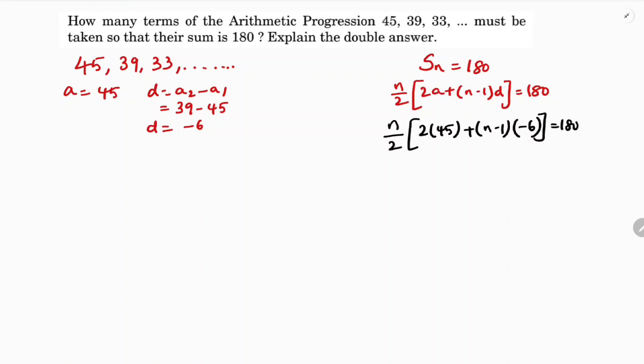If we'll transpose these two towards right side, n into 2 times 45 is 90, n minus 1 into minus 6, so minus 6n, minus into minus plus 6 into 1, 6 equals 180 into 2, which is 360.